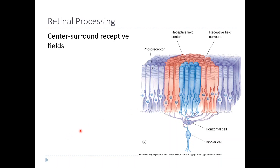If you're talking about the receptive field of a cell that gets input from one of these photoreceptors, like a bipolar cell, its receptive field corresponds to all of the cells that it gets input from. This bipolar cell gets direct input from all of these photoreceptors. This is a patch of retina in cross section, so really this would be a circle. Light anywhere in this region will have an effect on this bipolar cell.